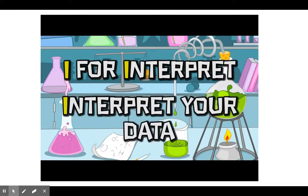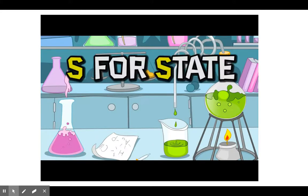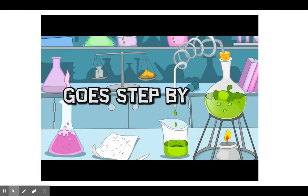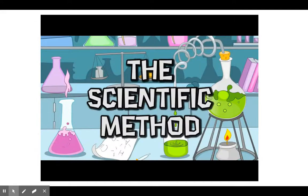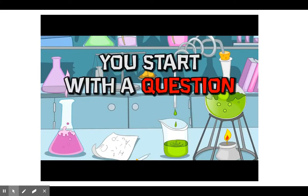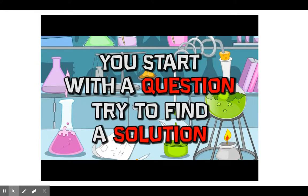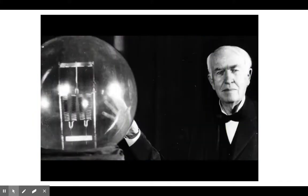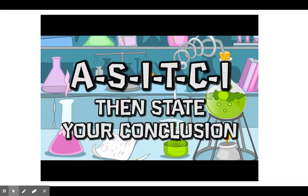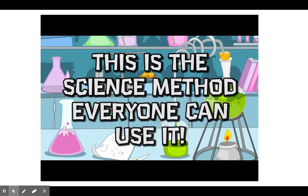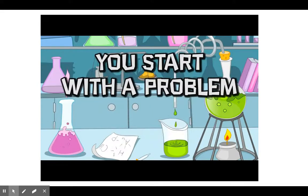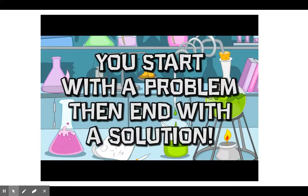You start with a problem. The scientific method — go step by step. You experiment; you start with a question, try to find a solution. Thomas Edison used the scientific method to make important discoveries about the light bulb. A-S-I-T-C-I, then state your conclusion. Everyone can use it. You start with a problem, then end with a solution. Sir Isaac Newton used the scientific method to make discoveries about the laws of gravity.